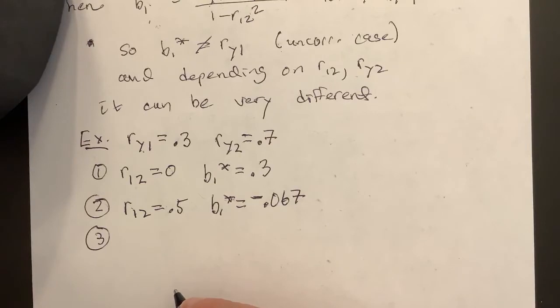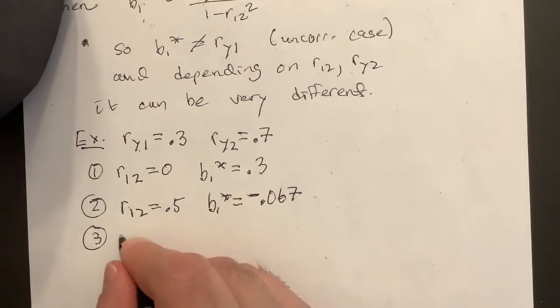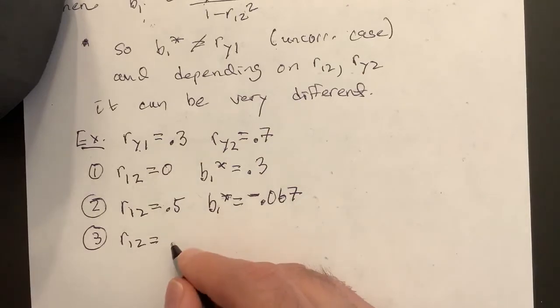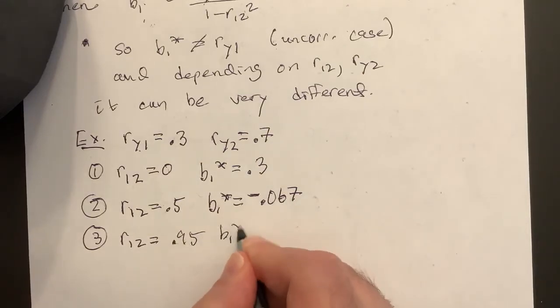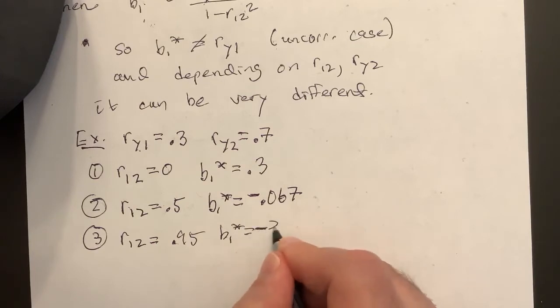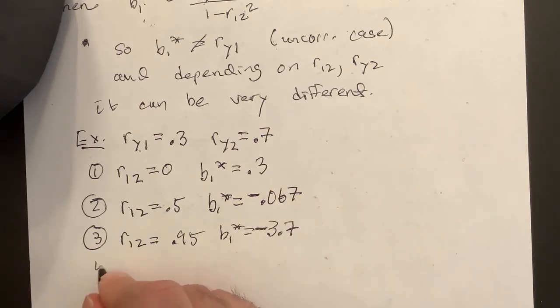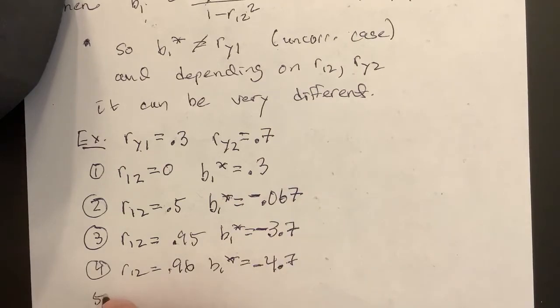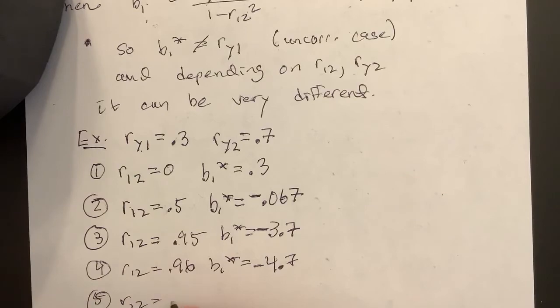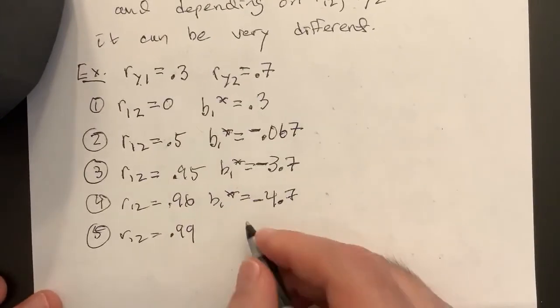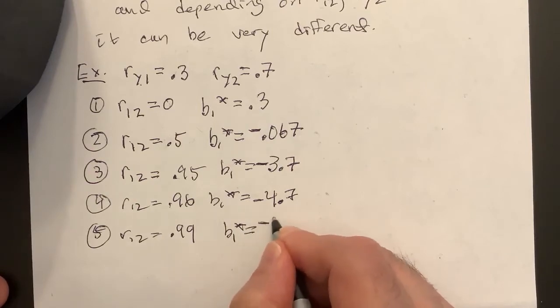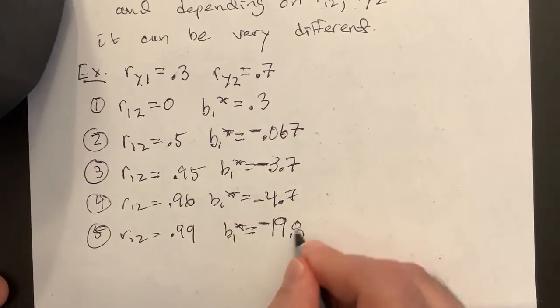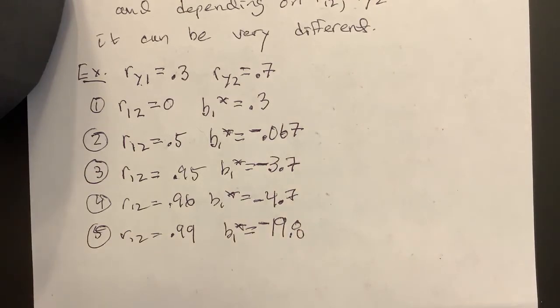So suppose I go 3, if I go R12 equals 0.95, I get B1 star equals minus 3.7. For R12 equals 0.96, B1 star equals minus 4.7. R12 equals 0.99, I get B1 star minus 19.8, I think.